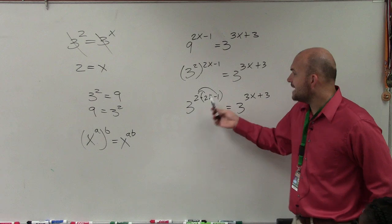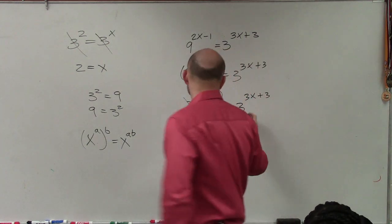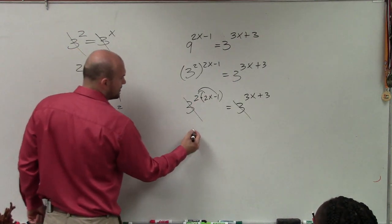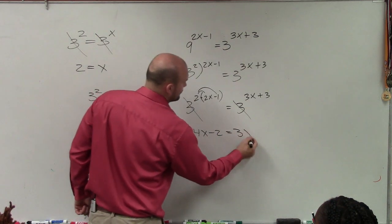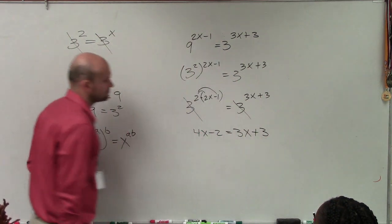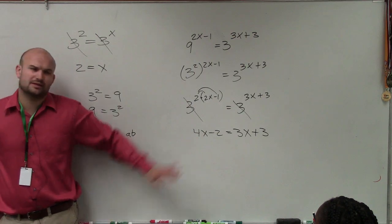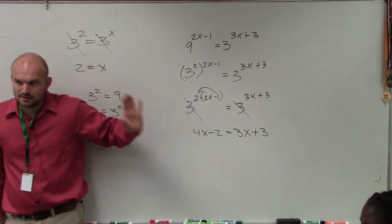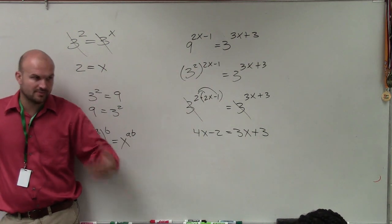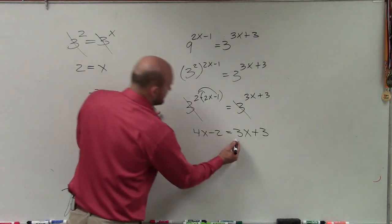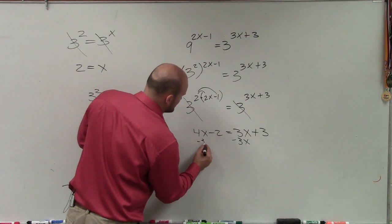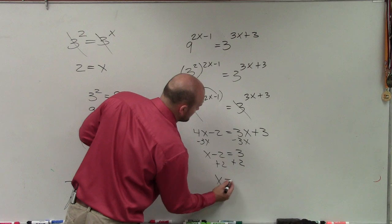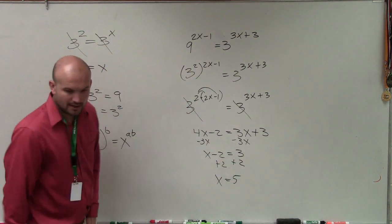So now we have the bases are equal. I can simplify those. So now I'll distribute property. So I'll do 4x minus 2 equals 3x plus 3. I'm going to go through this very quickly because we're going to learn how to solve equations. So I'm going to get the variables to the same side. So I'll subtract 3x on both sides. x minus 2 equals positive 3. Add 2, add 2. x equals 5. And that is your answer.